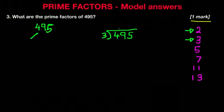How many 3s go into 4? The answer is 1, carry 1. 3s into 19 is 6, carry 1. 3s into 15 is 5. There are no remainders, so 495 can be divided by 3, and what we're left with is 165.